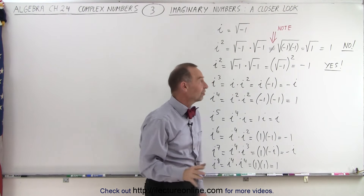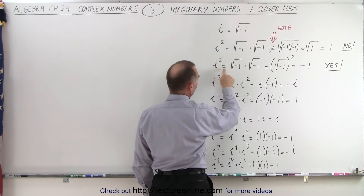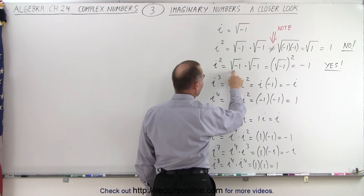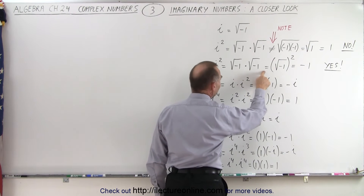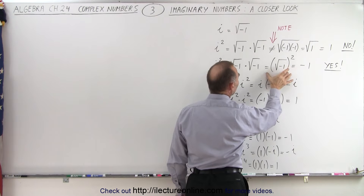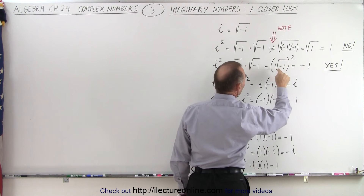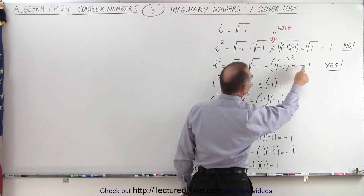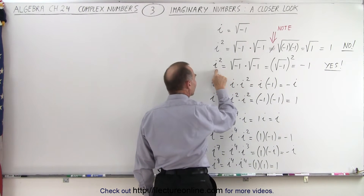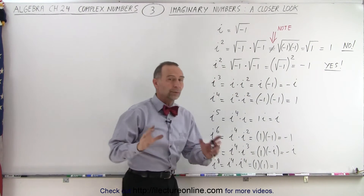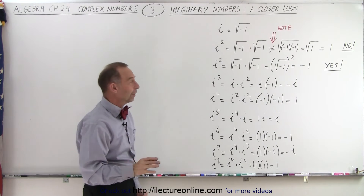What we should do instead is the following: i squared equals the square root of negative 1 times the square root of negative 1, which is essentially the square root of negative 1, quantity squared. The square of a radical undoes the radical, which gives us negative 1. And that is indeed correct — i squared is equal to negative 1.